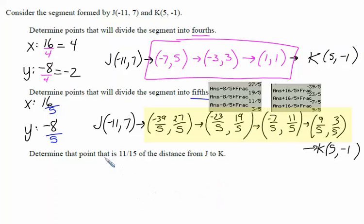We have one more item. Determine the point that is 11 fifteenths of the distance from J to K. So x normally goes 16 the whole way. Y normally goes negative 8 the whole way. The easiest way to do this is to find the new x-coordinate. We take the original x-coordinate, which was negative 11,